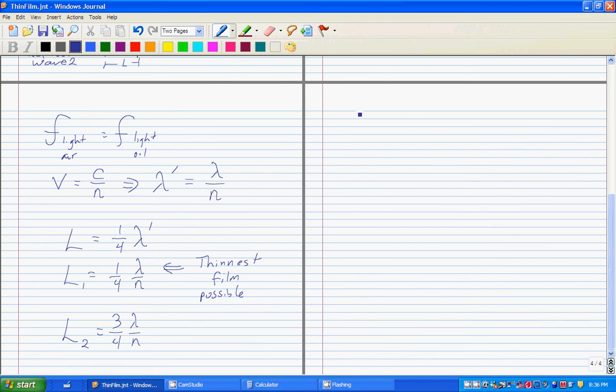If we keep going, the next one possible is five-fourths the wavelength. We should begin to see a pattern. The allowed thicknesses that cause reflection are an integer divided by four times lambda over n, where m equals an odd integer.